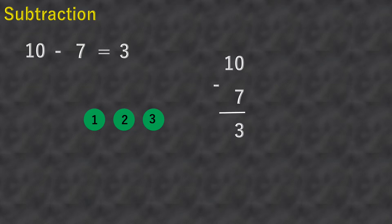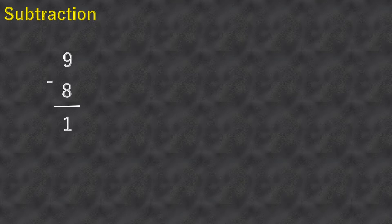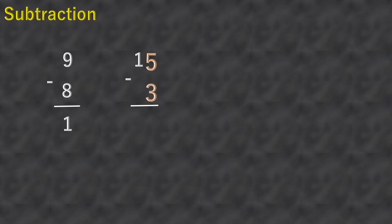Nine minus eight equals one. We'll try fifteen minus three. First, subtract three from five: five minus three equals two. The next step is to just bring down the one, so fifteen minus three equals twelve.